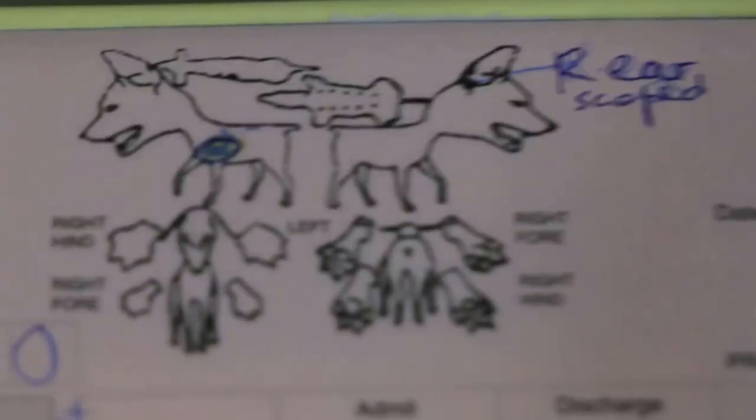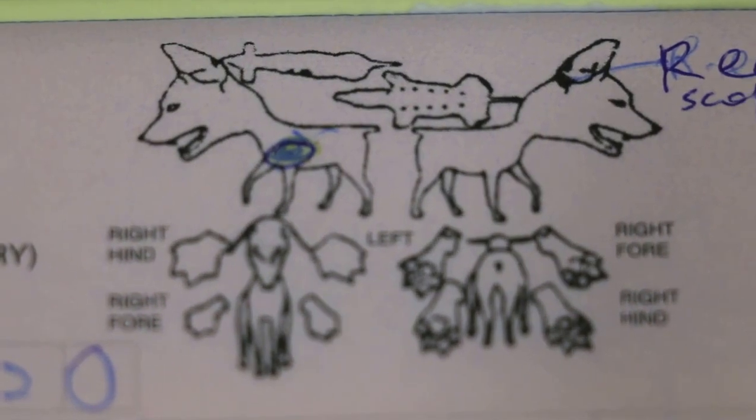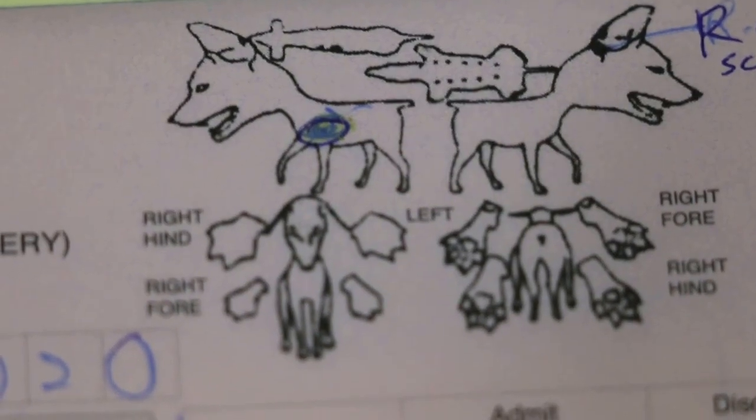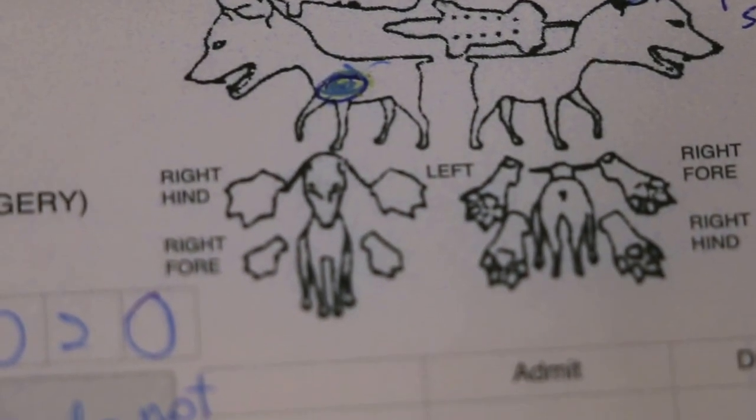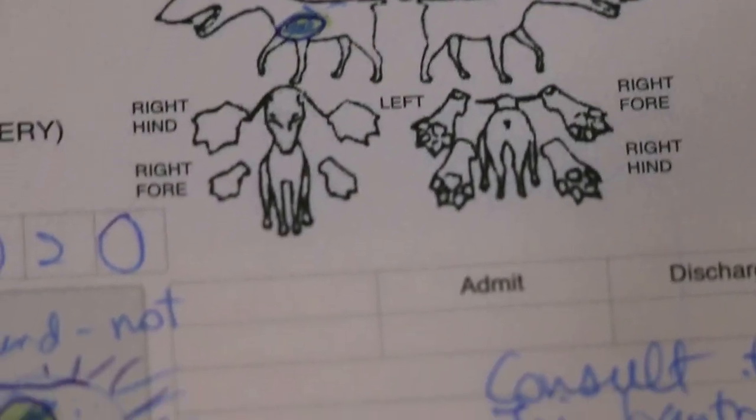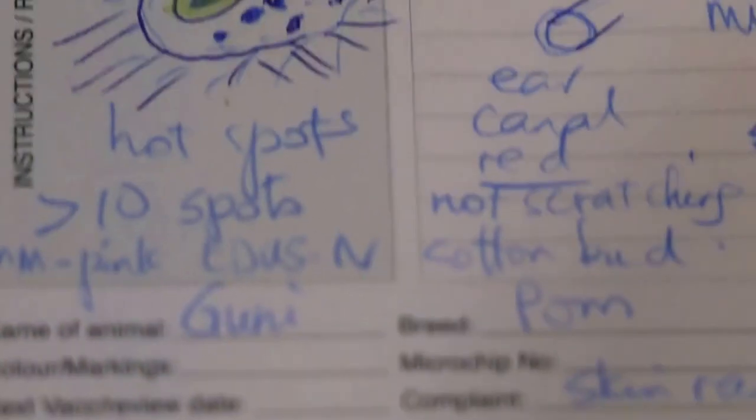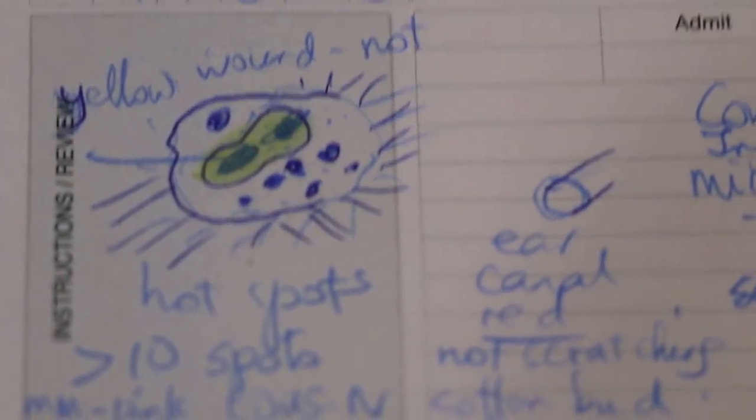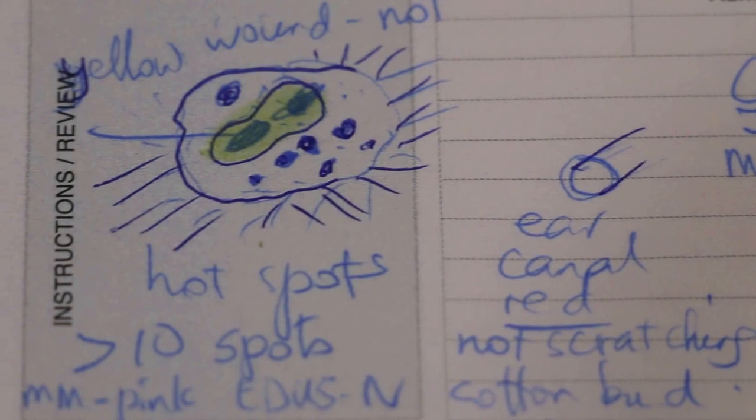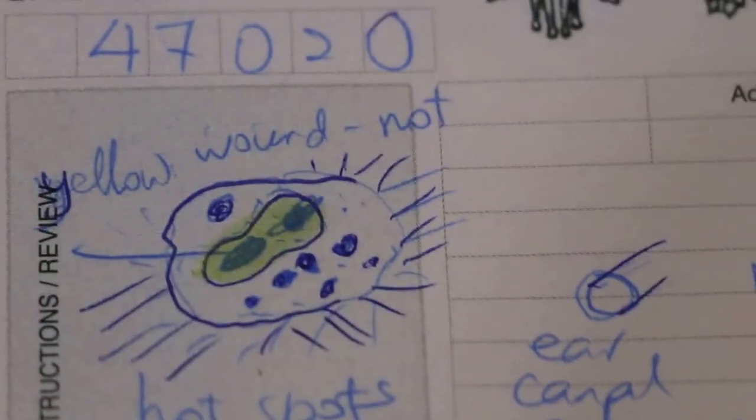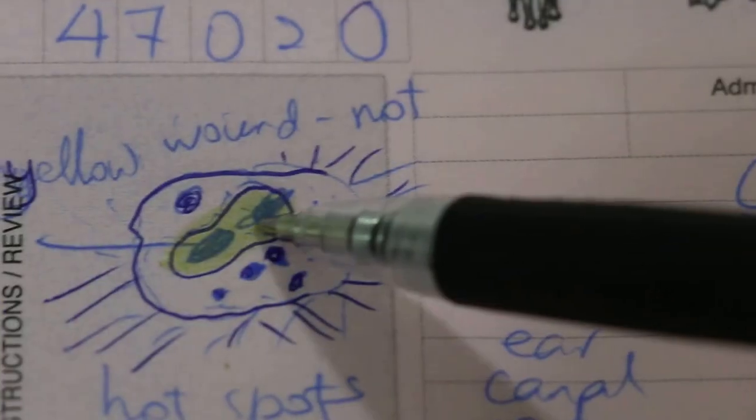The Pomeranian has gone home, so I'm just showing the case records. Now the hot spot is a patch of hair loss above the left elbow measuring about 4 inches by 3 inches. The owner has clipped off the hair and there is a yellow patch which is an ulcerated skin.